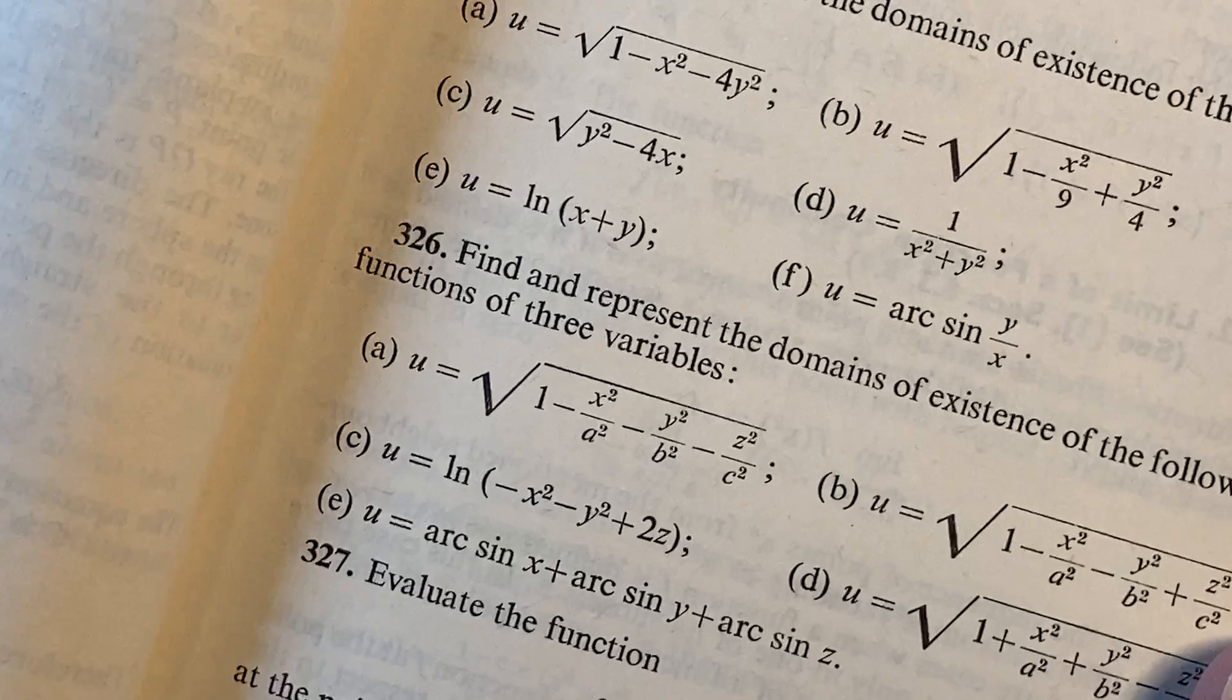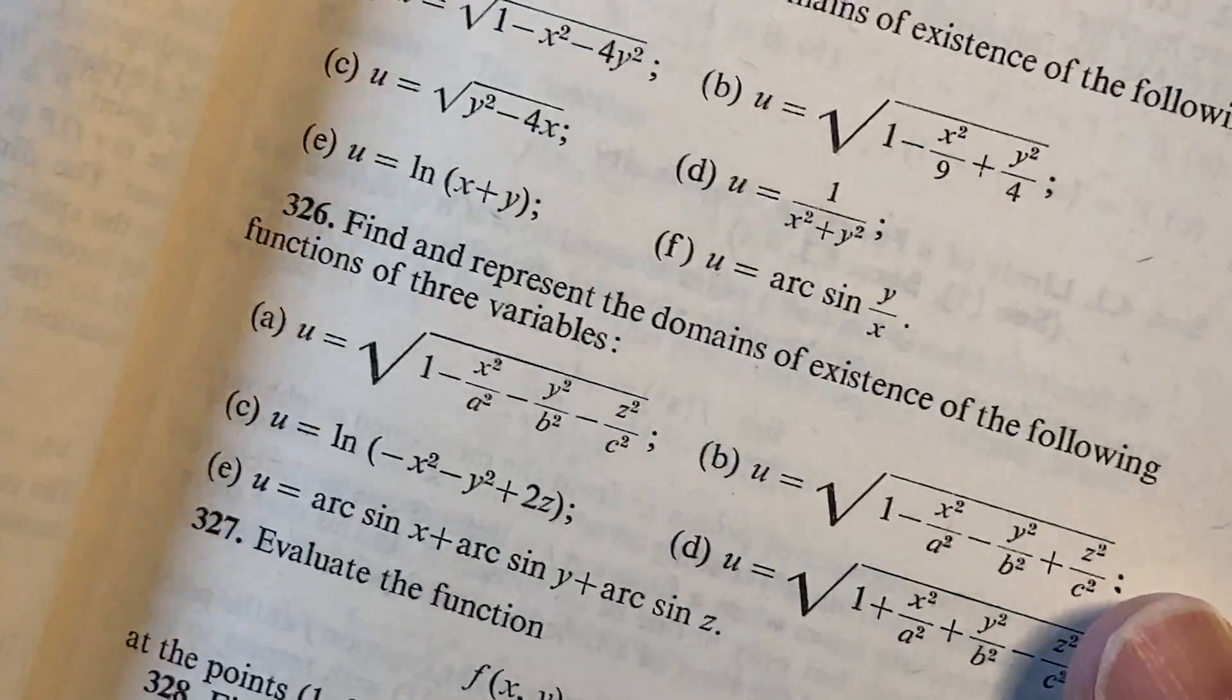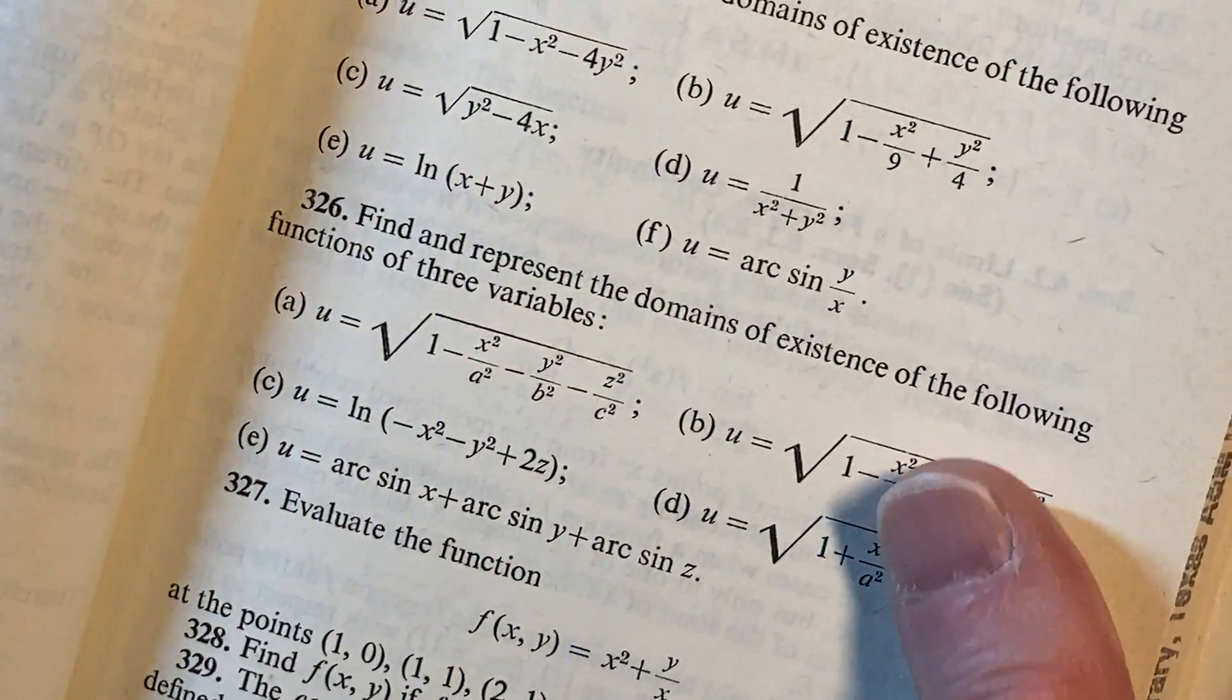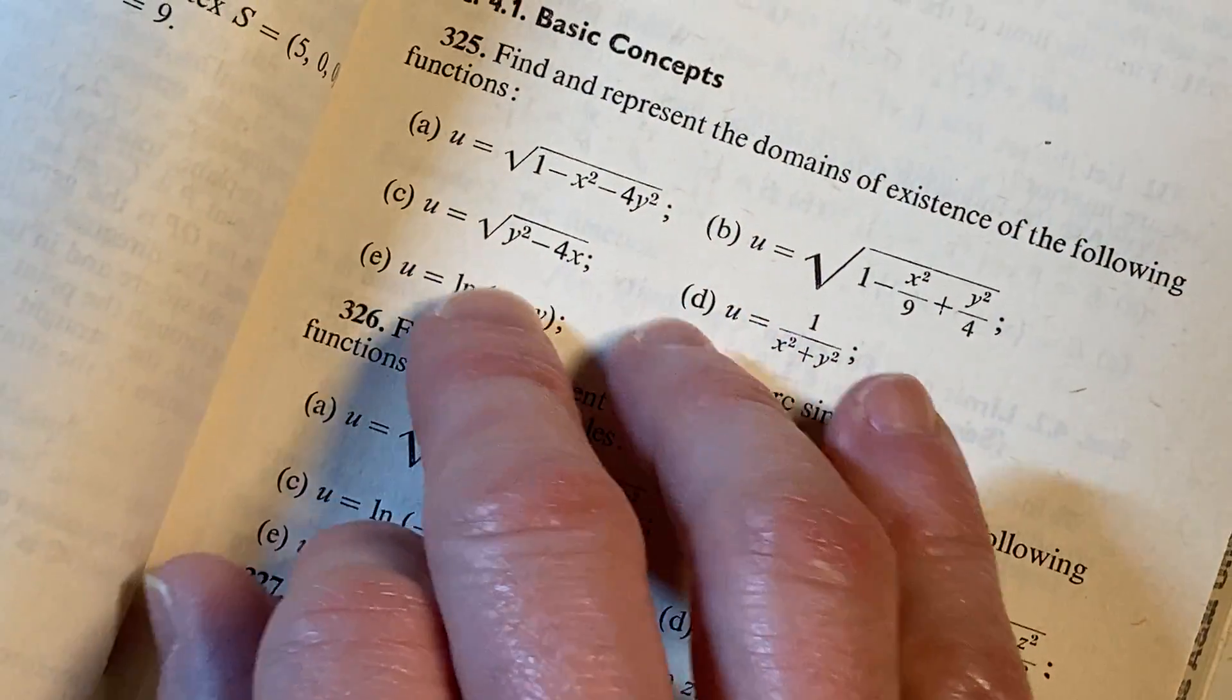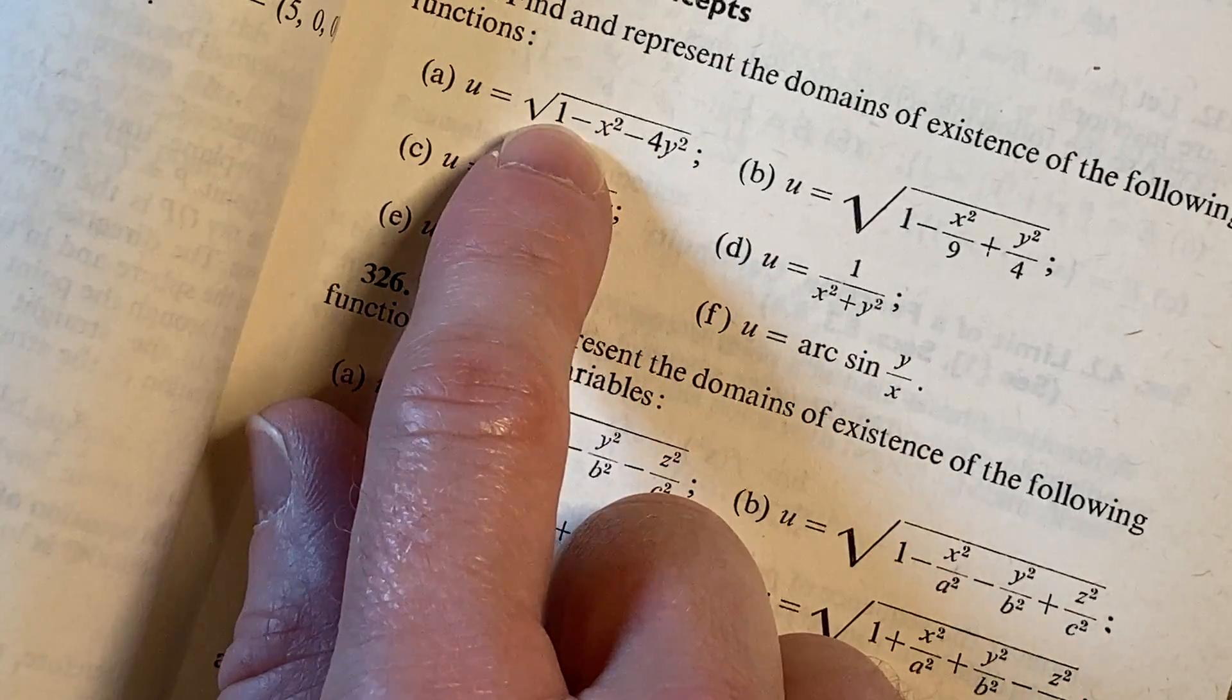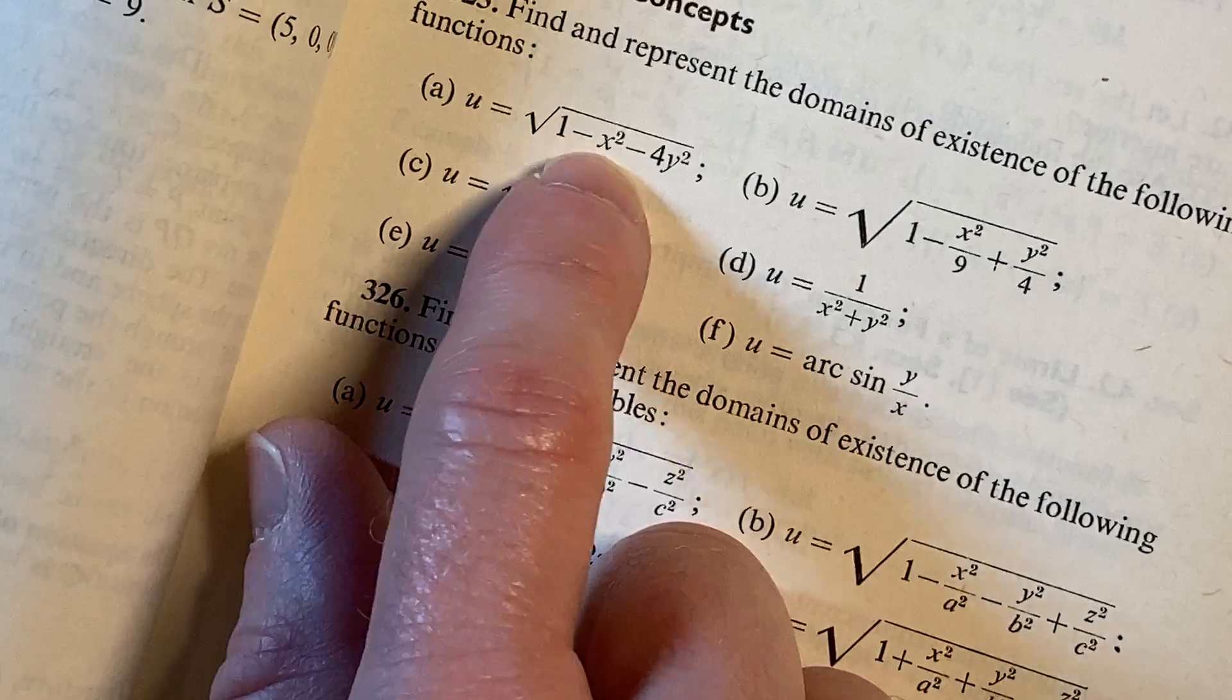Lying on the X or Y axis, functions of several variables: find and represent the domains of existence of the following functions. Oh, that's fun. That's pretty cool. Get some fun answers here. And you can think about what that domain is geometrically. Like for example, here, you basically got to take this and set it greater than or equal to zero, what's inside the radical here, right?